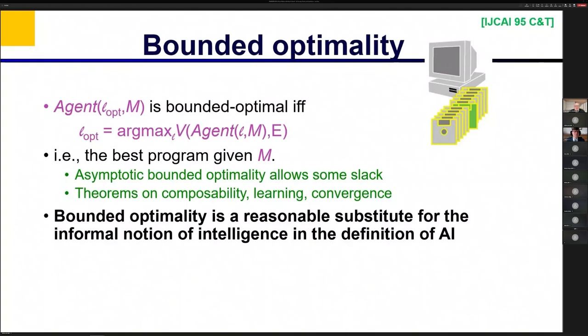So this is not a new idea in economics. Simon wrote about bounded rationality back in the 50s, and there's been a lot of work in economics, mainly on descriptive models of bounded rationality. But in AI, we developed this concept of bounded optimality, which means that even though you have a finite computer to run it on, you can't be perfectly rational.